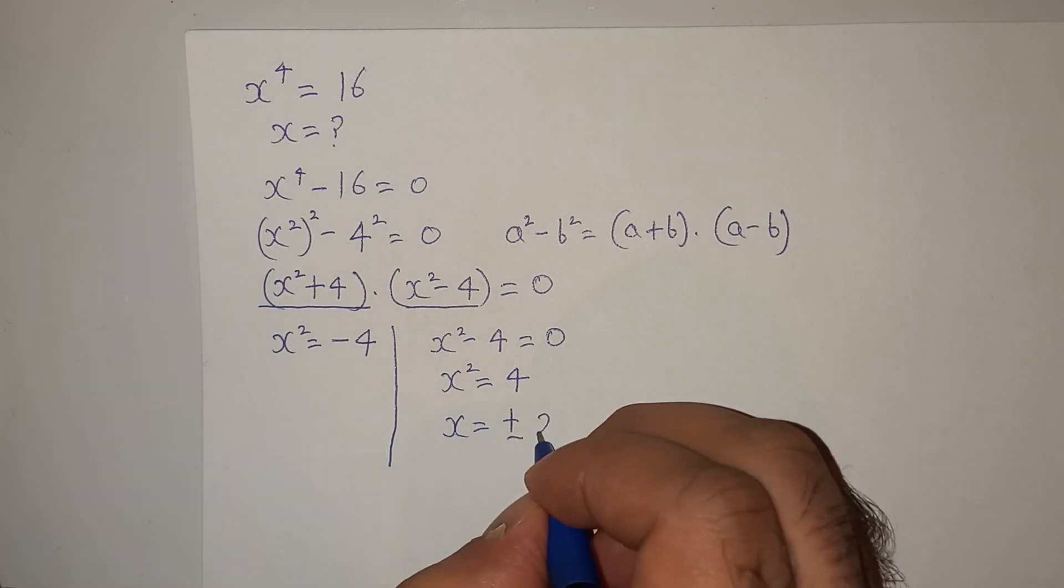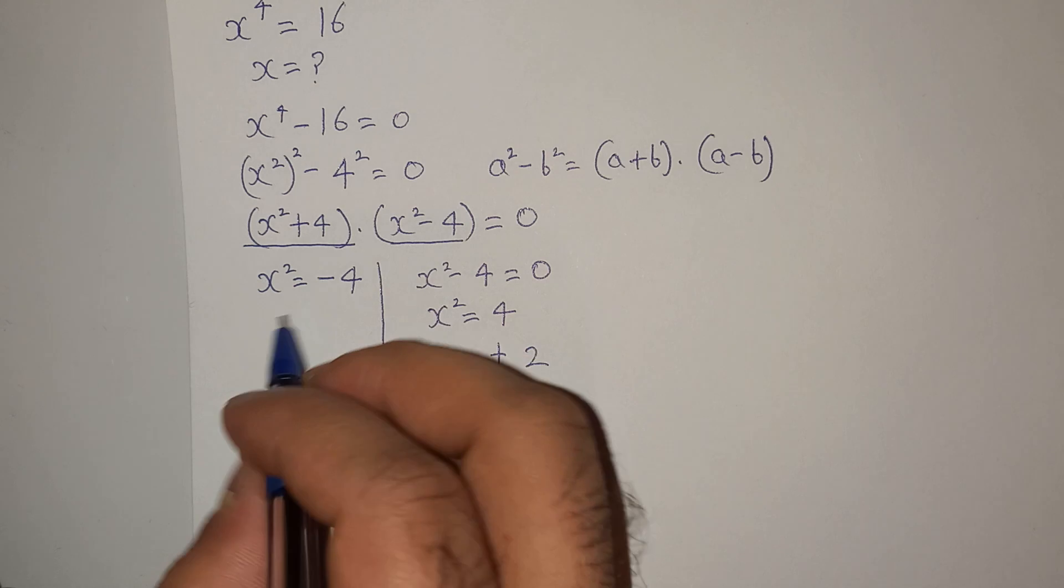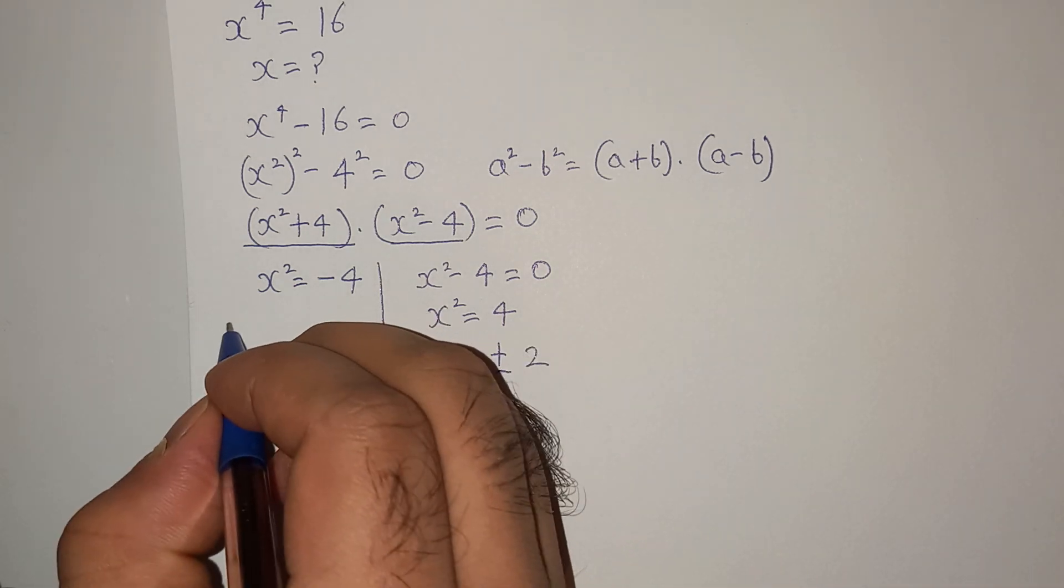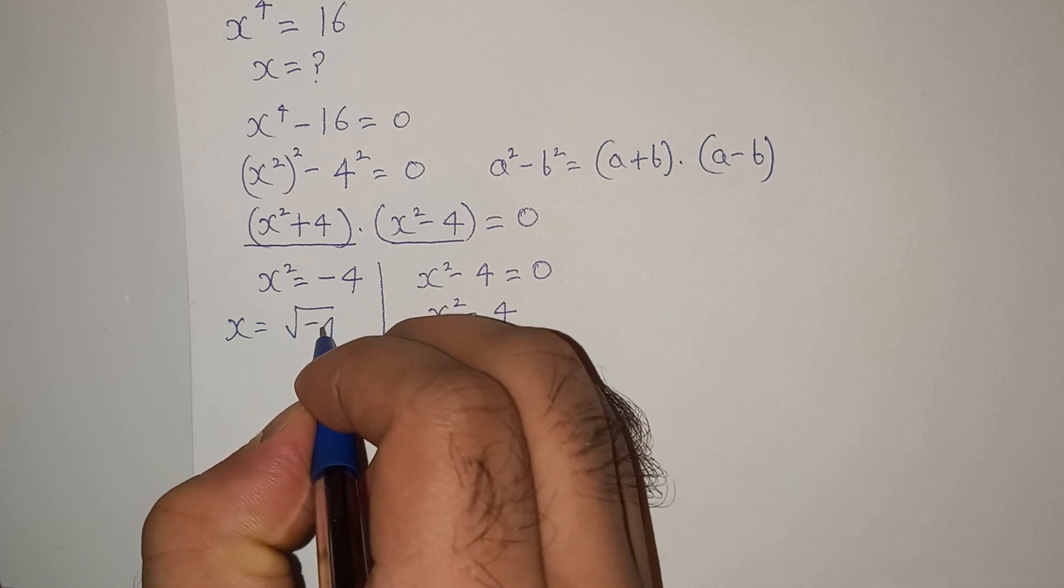So the value of x will be plus minus 2. This is clear. Now to solve this, we will have x equals under root minus 4, plus minus.